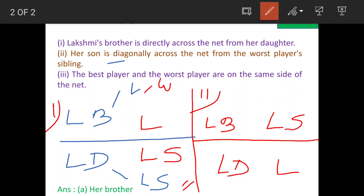Now for the best player, the condition given is that best and worst player are together. So here Lakshmi is worst player, she is worst player. That means her brother is the best player. And here Lakshmi's son is worst player, so that means her brother is actually the best player. So in both the conditions, option A is the correct answer. That means her brother is the best player.